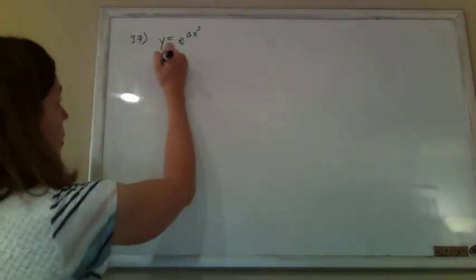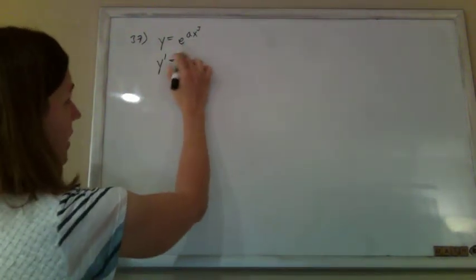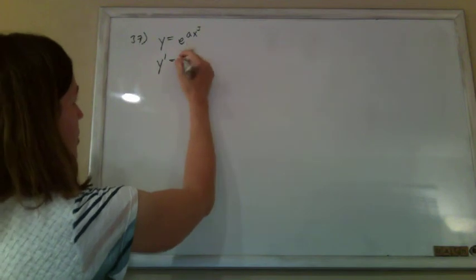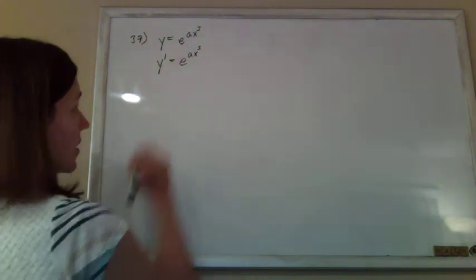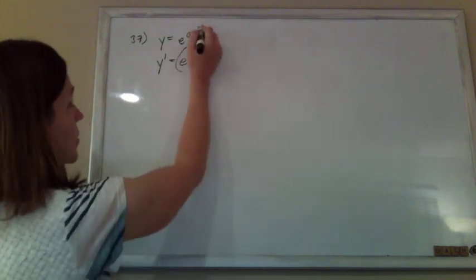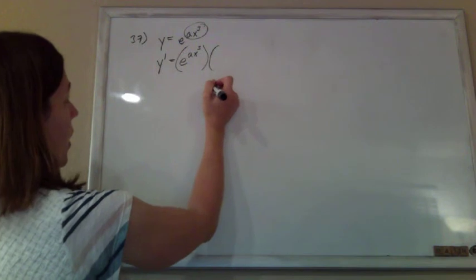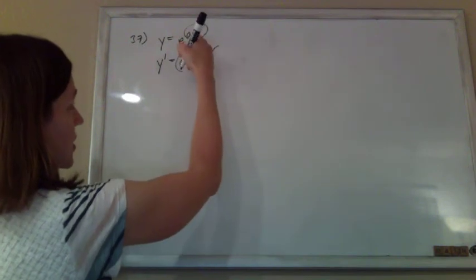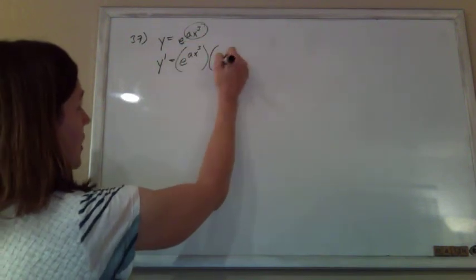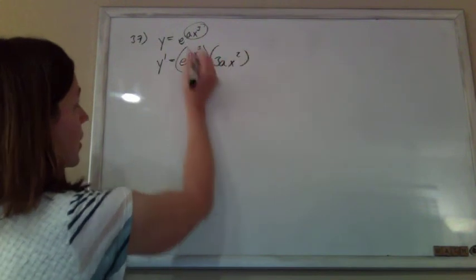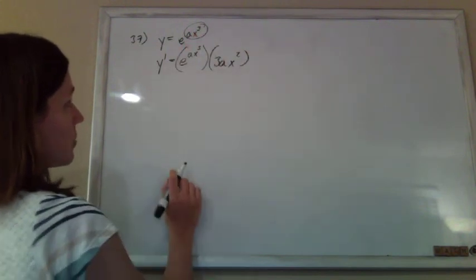Alright, so we've got some chain rule going on here, because we don't just have e to the x — we have e to some function. The derivative of e to something is just itself, times the derivative of its exponent, that inside function. So a is just a constant, so when you're taking the derivative of x cubed, it'll just be 3ax squared — multiplying by the 3 and dropping that power down 1. And that's fine.